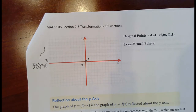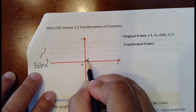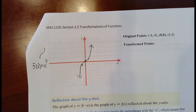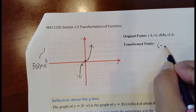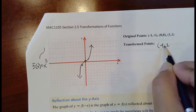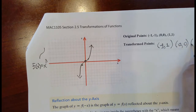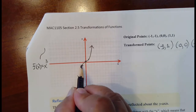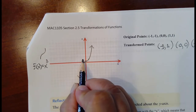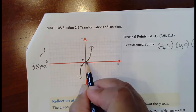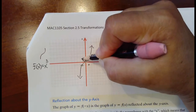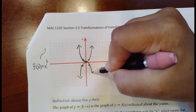The transformed points turned out to be negative one, one; zero, zero; and one, negative one. Connecting those in the same cubic fashion, the graph goes in the opposite direction — negative one, one up top, then zero, zero, then one, negative one. If you were to take the original and rotate it across the x-axis it would look like this. This is our original function and this is our rotated function — flipped over the x-axis — and that's called a reflection.